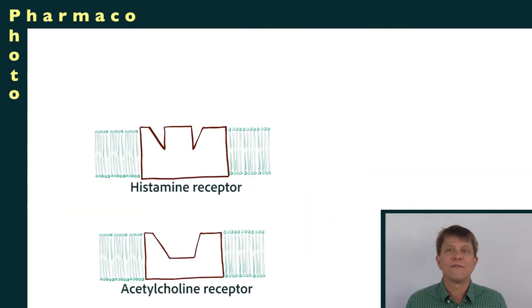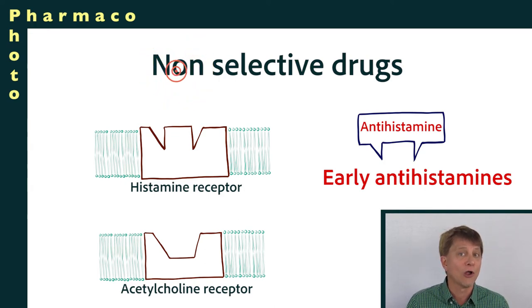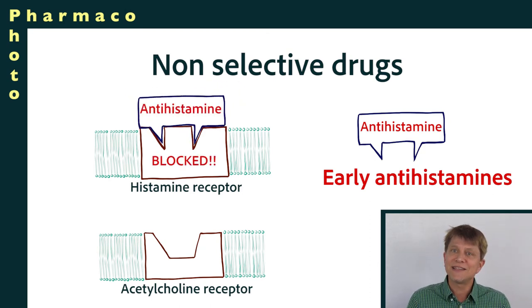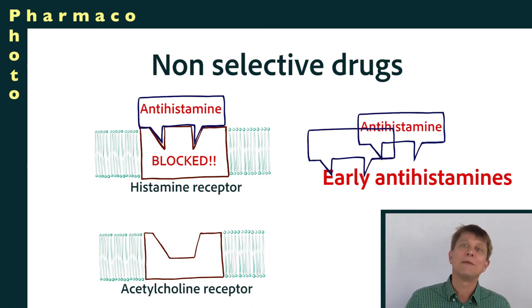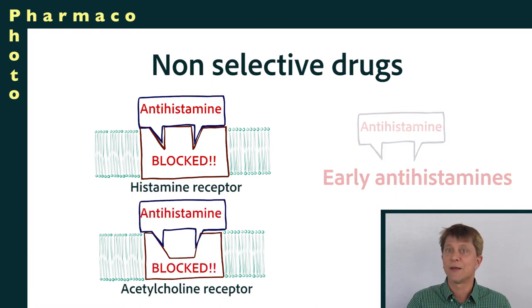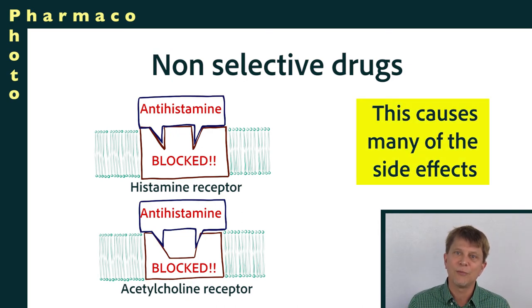We also have drugs that will bind to another receptor — a receptor that doesn't seem to be related to the original receptor at all. For instance, the early antihistamines bound to and blocked the histamine-1 receptor, which was what they were supposed to do. But they also bound to and blocked the acetylcholine receptor, and a lot of the adverse effects of that medication were found because of that binding to the acetylcholine receptor.